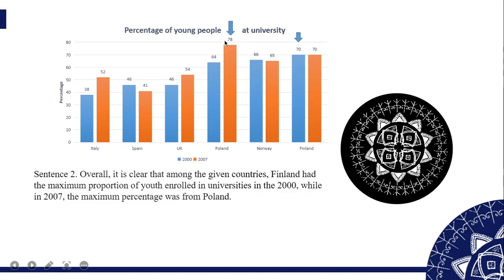At this time, we should choose the highest level. In 2007, the highest level was in Poland — 78% of young people enrolled at universities. The second sentence reads: 'Overall, it is clear that among the given countries, Finland had the maximum proportion of young people enrolled in 2000, while in 2007, the maximum percentage was from Poland.' We use 'while' in order to combine the two years, since in both years the leading country is different.